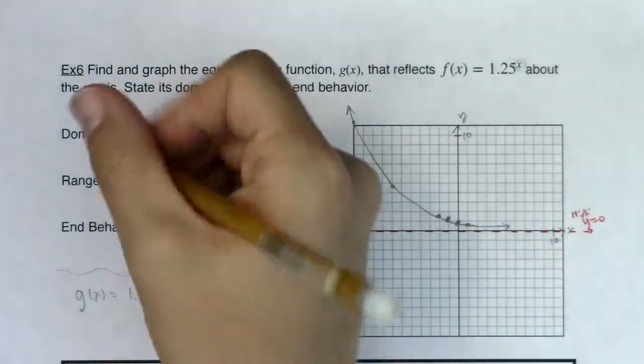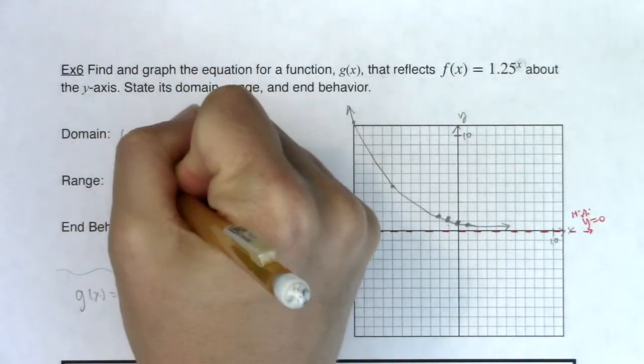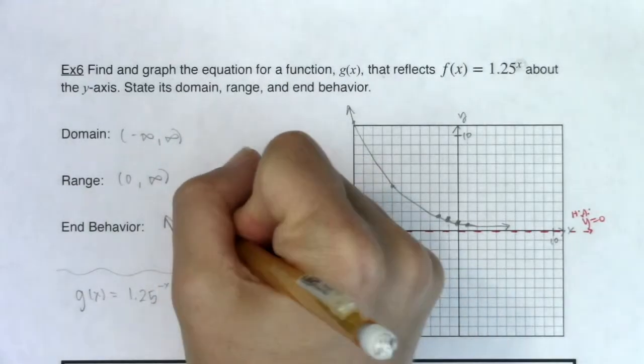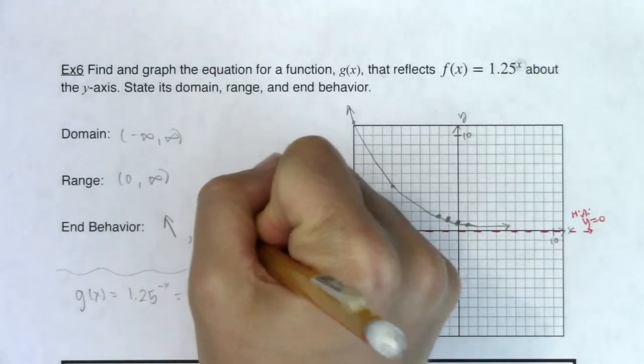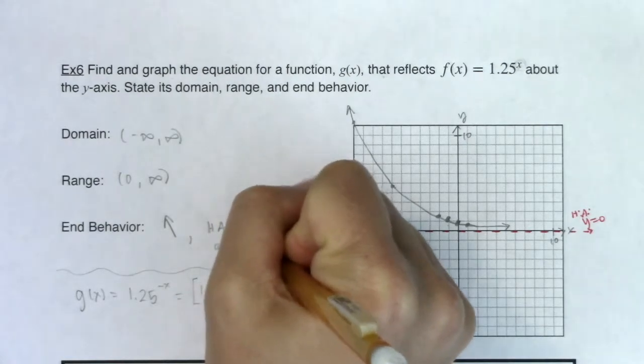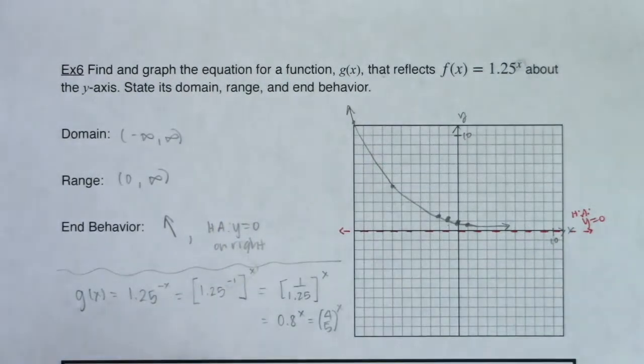The range, I can see it goes from my horizontal asymptote of 0 up to positive infinity. For end behavior, I actually have the arrow on the left side. And for exponential decay, that's where your horizontal asymptote will show up on the right side.